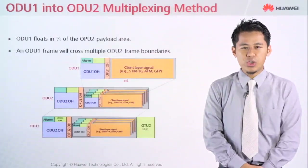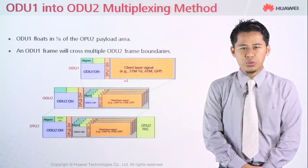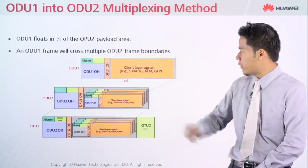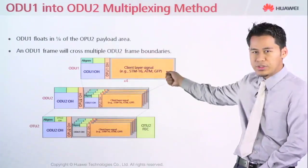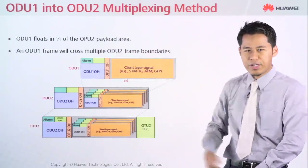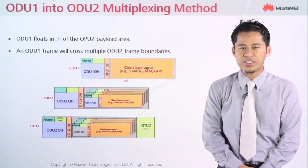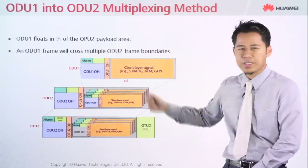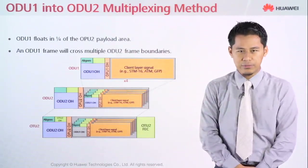This is the ODU1 to ODU2 multiplexing method. As you can see, we have one ODU1 which is 2.5 Gbps, and you multiply — times 4 — to become the ODU2 level.